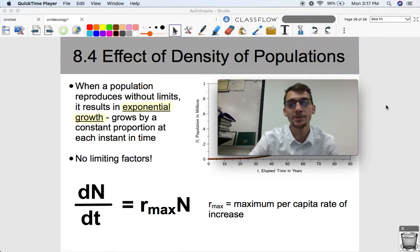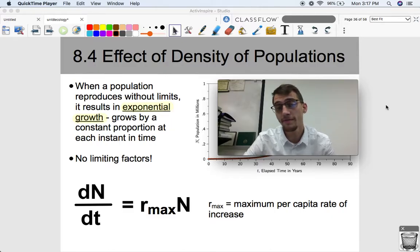Hi everybody, it's your AP Biology teacher, Mr. Poser. Today we are continuing our eighth unit in AP Biology on Ecology by basically doing part two of 8.3. So 8.4, the topic for today, is the effect of density on populations.